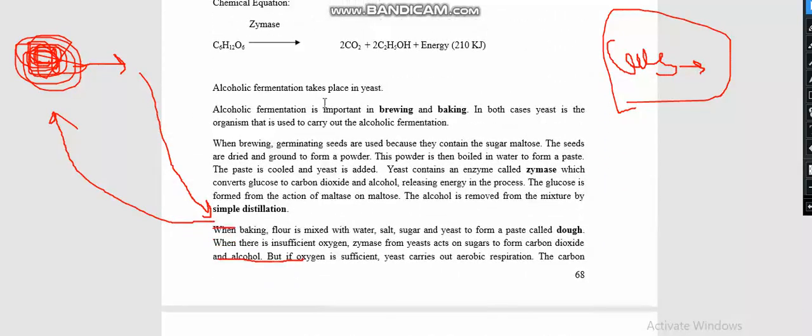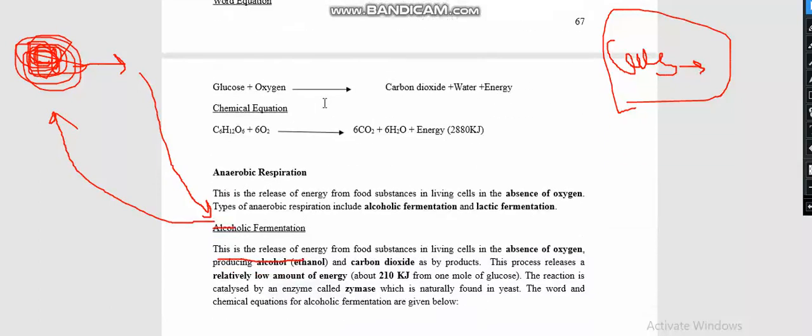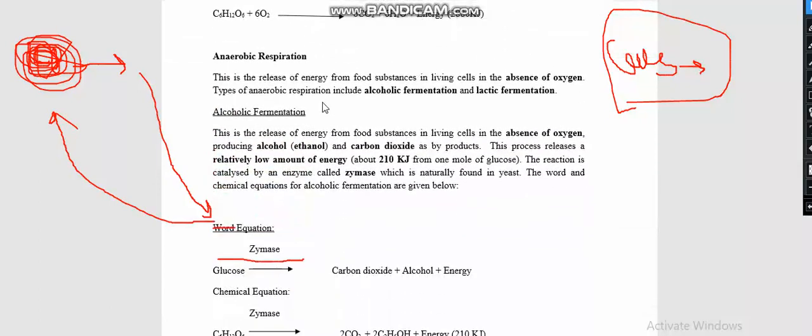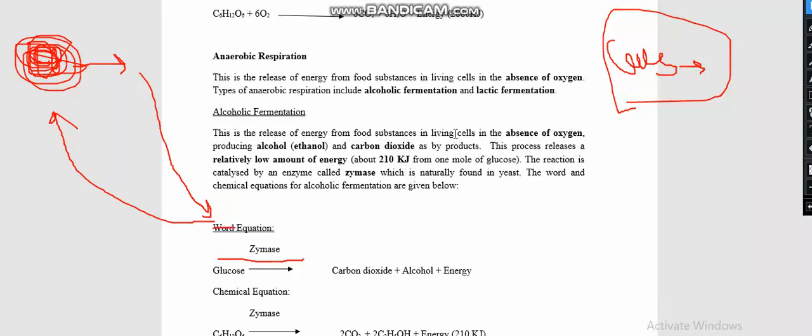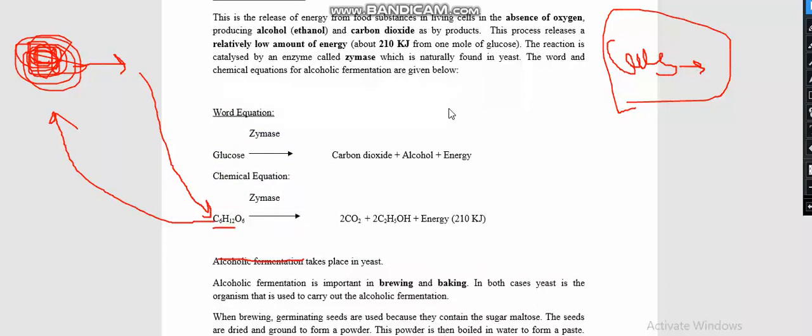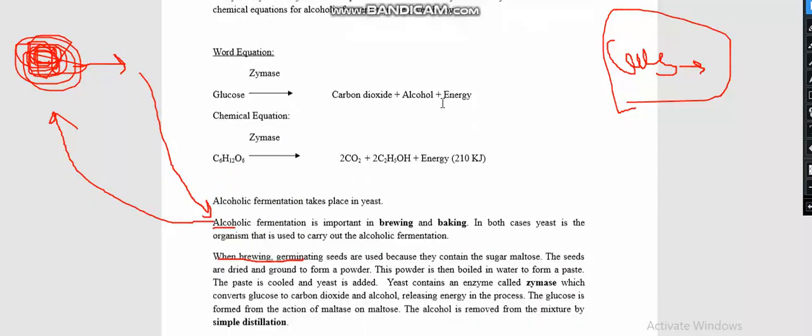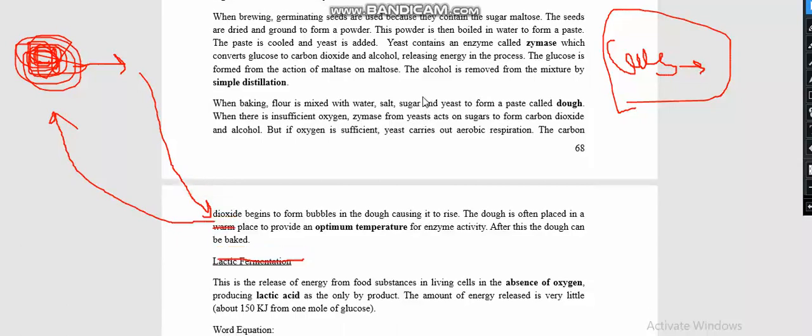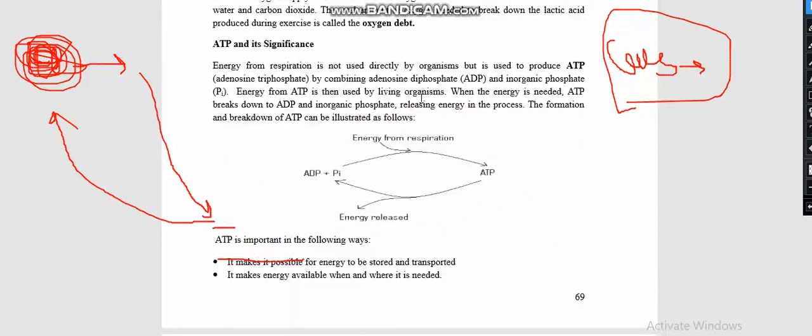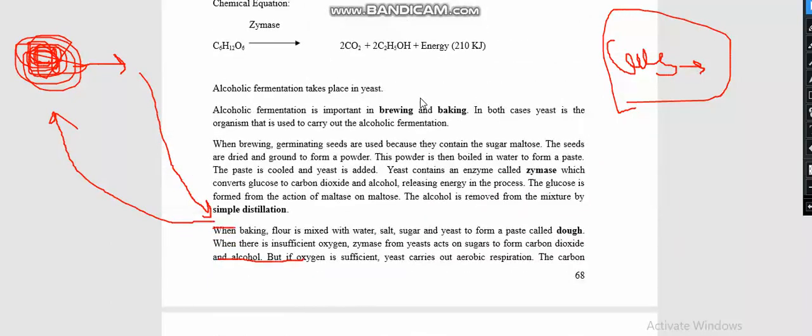Thank you so much for watching this video. We looked at respiration, types of respiration—aerobic and anaerobic. Anaerobic respiration was further branched into alcoholic and lactic fermentation. We looked at what lactic fermentation is and what alcoholic fermentation is, the differences in terms of energy and what they produce. We further looked at adenosine triphosphate, which is a form of energy stored in human beings so that energy can be used when the body needs it, and we also looked at its importance.